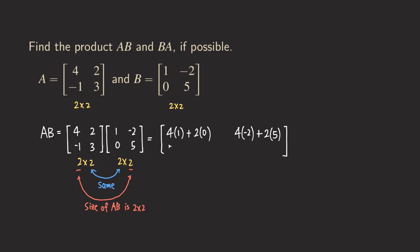So we have negative 1 times 1 and then 3 times 0 for the (2,1) entry. The last entry is the second row and second column: negative 1 times negative 2, plus 3 times 5. So now we have the full product set up, and of course we're going to simplify this.